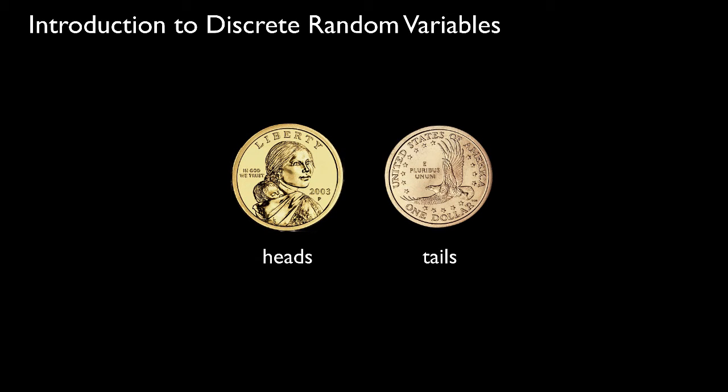To begin our introduction to discrete random variables, let's start with a simple experiment where we toss a coin until we see heads for the first time. Let's assume that the probability of seeing heads on any given toss is equal to some number p. For a fair coin, this probability is equal to one half, but for this example, we'll let it take some arbitrary value between 0 and 1.